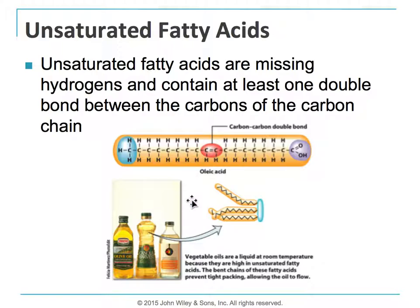They're missing because these two carbons have a double bond between them. The carbon on the left is connected to its neighbor for one bond, this hydrogen for two, and then uses its last two bonds to create a double bond with the neighboring carbon. The same is true for the other carbon.